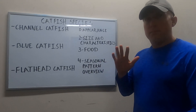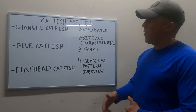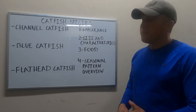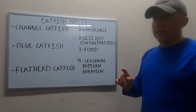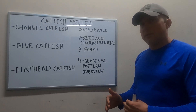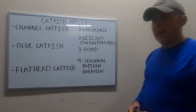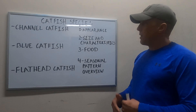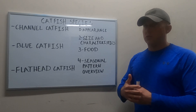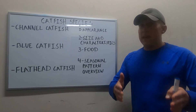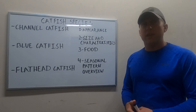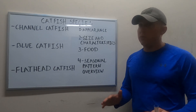I'm going to go over the three primary catfish that you find in North American waters: the channel catfish, the blue catfish, and the flathead catfish. I'm going to break down for each of them their physical appearance and how you can identify each one, their size and characteristics — meaning the typical size you would find, what is a trophy class fish, and how they behave differently as they get to different sizes, because their size actually determines what they feed on and what they do.